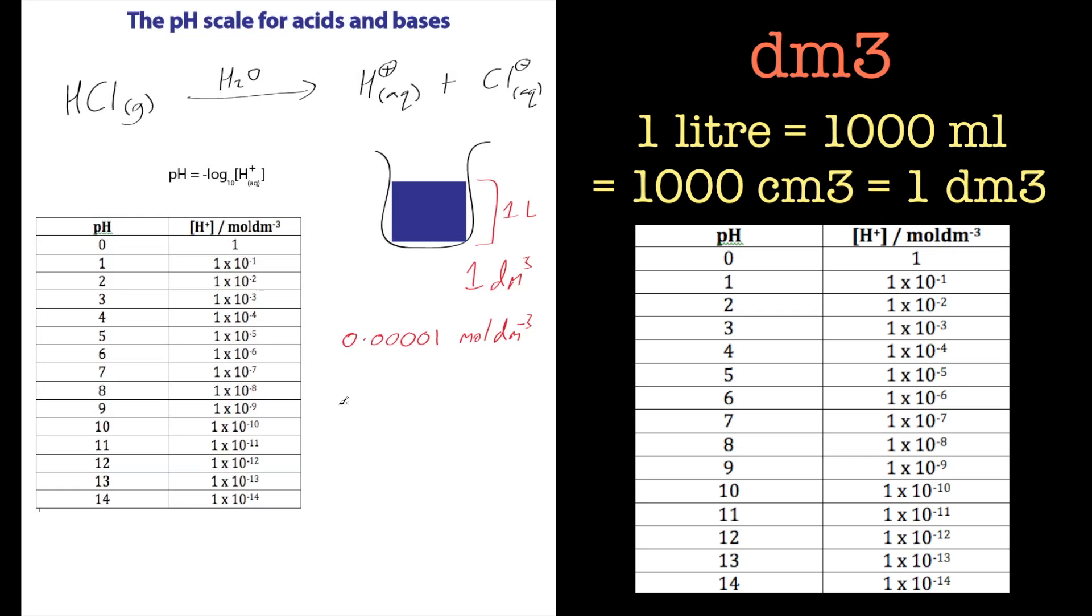So pH equals 3.6 - what does that mean? Well, that means the concentration of H+ in our solution in moles per decimeter cubed is 10^-3.6 moles per decimeter cubed. If we wanted to work out what that was, we would work backwards. If we knew how many moles we had, we'd just be able to do the reverse on that.